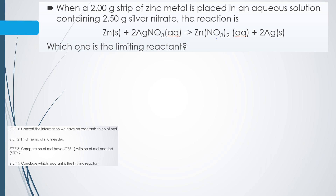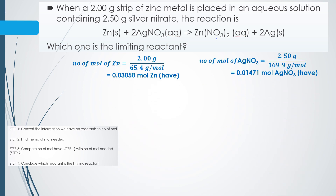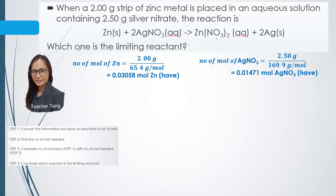Remember the 4 steps to determine the limiting reactant. Step 1: we must convert all the information on the reactants to number of moles. In this question, we have been given the mass of zinc metal and the mass of silver nitrate. So in step 1, we must convert both into number of moles. Mass is divided by the molar mass to get the number of moles. These are the number of moles of reactants that we have. In step 2, we must find the number of moles needed from the balanced chemical equation.